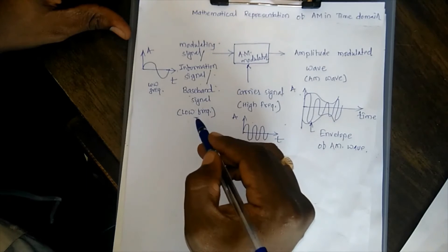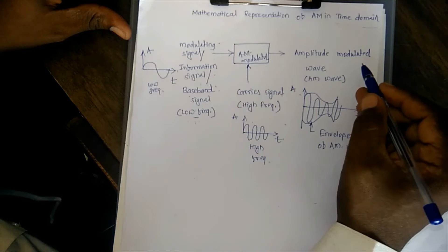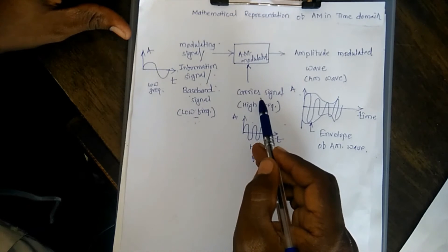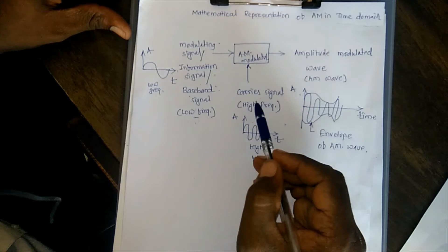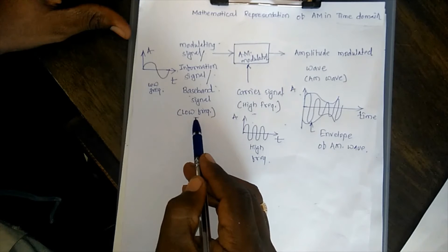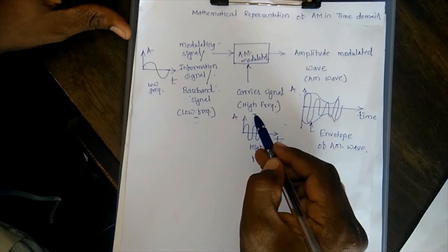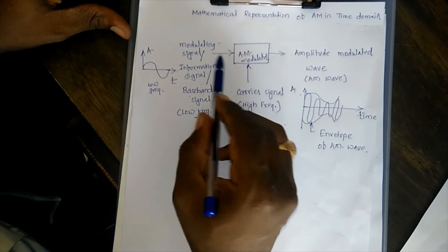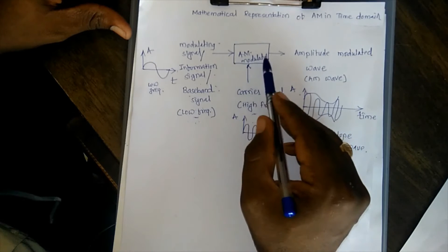Only because of its low frequency, it is not possible to send a low frequency signal for a longer distance. To send that particular low frequency modulating signal for several kilometers, we have to superimpose that modulating signal on a high frequency carrier signal. The second signal which we need is called as the carrier signal. The carrier signal always has a frequency higher than that of the low frequency modulating signal. One input for the AM modulator is the modulating signal, the second input is the carrier signal, and the output of the AM modulator block is the amplitude modulated wave.